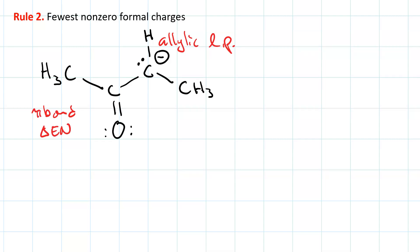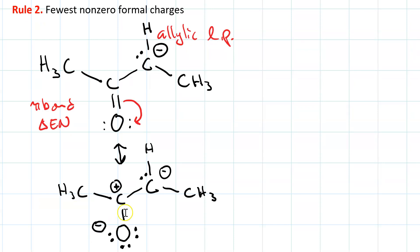So, let's start off with the single curved arrow, and the result of that is definitely less stable, because now we have three non-zero formal charges, instead of just one where we started. Moreover, we have a carbocation adjacent to a carbanion. That typically is very unstable.